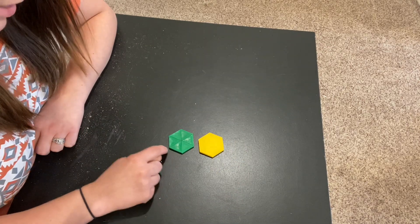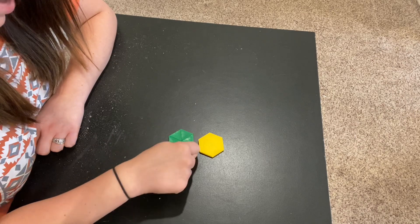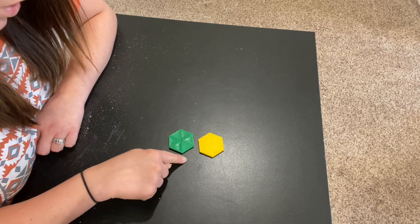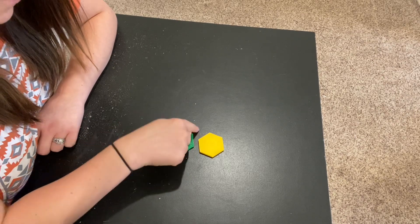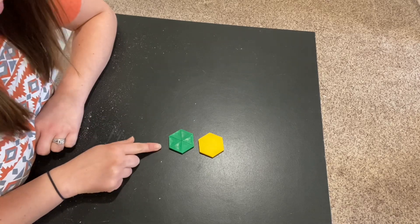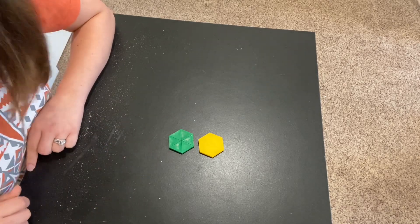We have one, two, three, four, five, six sides and one, two, three, four, five, six vertices. So this is a hexagon made out of six triangles.